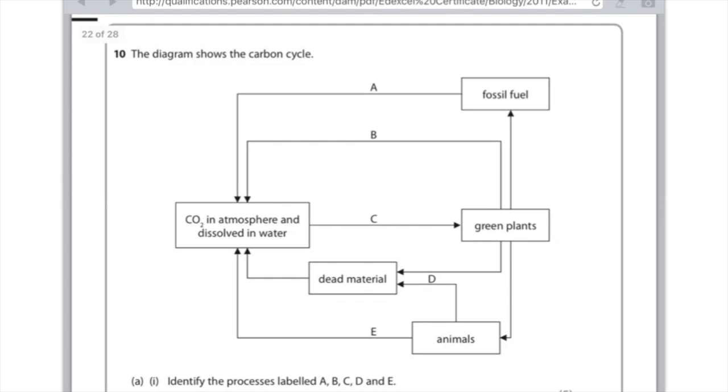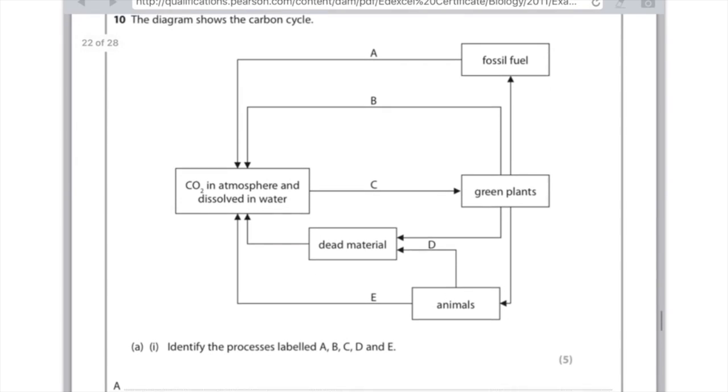The diagram shows the carbon cycle. Identify the processes labelled A, B, C, D and E. Don't panic with these questions. Just think really clearly and you'll be able to work it out. Let's look at A. We've got an arrow going from fossil fuels to CO2 in the atmosphere. The only thing you can really do to a fossil fuel is burn it. So for A, you need to write burning or if you're feeling fancy, you need to write combustion.